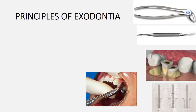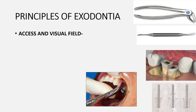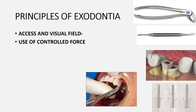The principles of exodontia are divided into two types: basic principles and mechanical principles. The first basic principle is access and visual field — there should be good access and a clear visual field when removing the tooth, so the operative site is clearly visible. The second basic principle is use of controlled force.